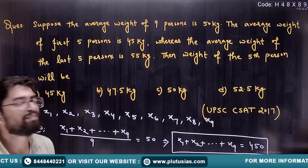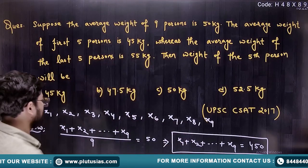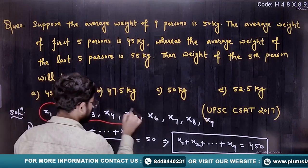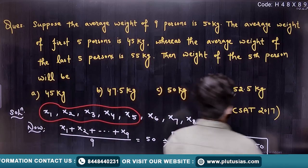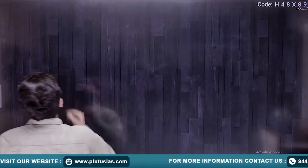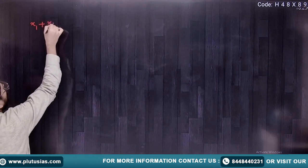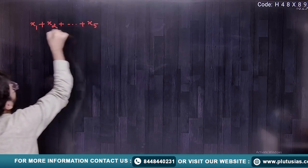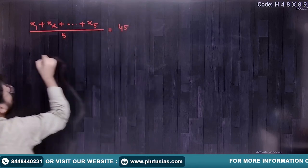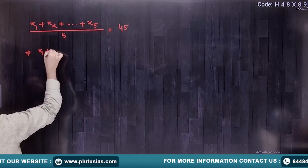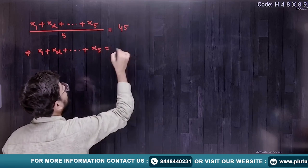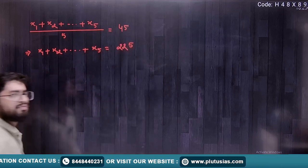Now, you are given the average of the first 5 persons. For the first 5 persons, average is 45. So X1 plus X2 plus X3 and till X5 divided by 5 equals 45. So X1 plus X2 plus till X5 equals 45 into 5, which is 225.